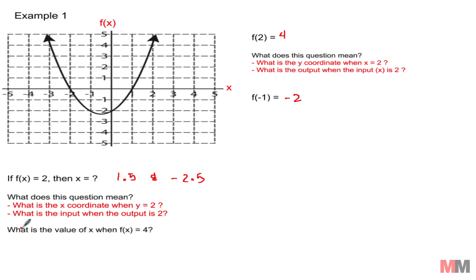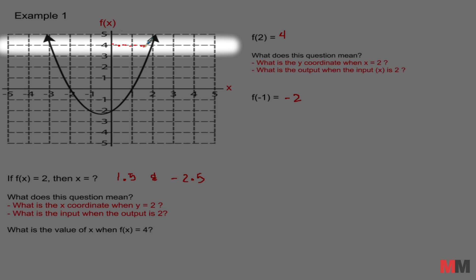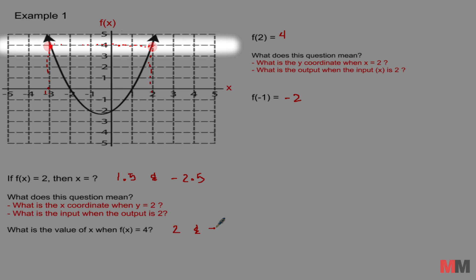So let's go through this one first. What is the value of x when f of x equals 4? Just go through the f of x or the y axis until you get to 4 and scan left and right just to see where that graph is at. So one answer is going to be x equals 2 and the other answer right behind it.